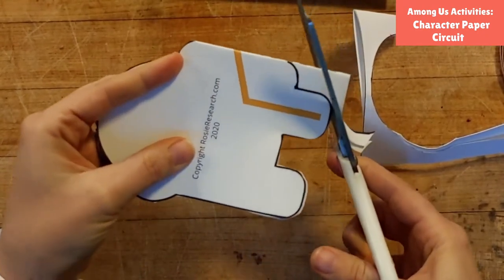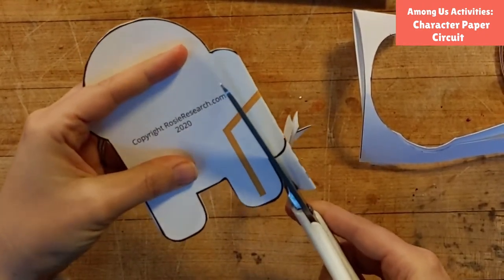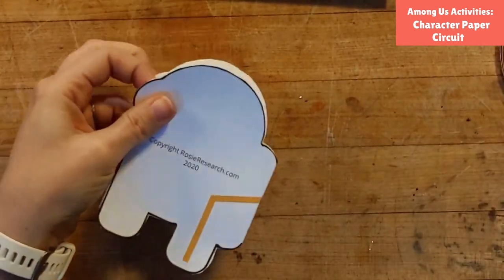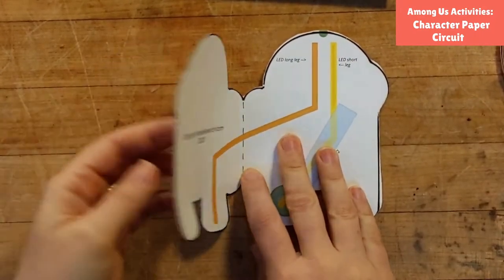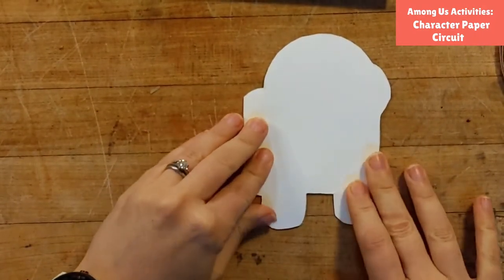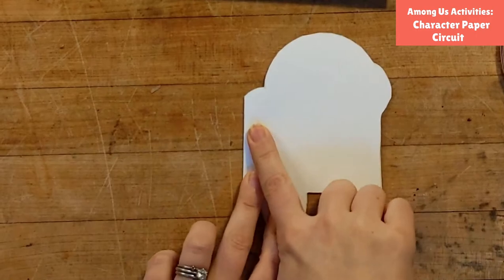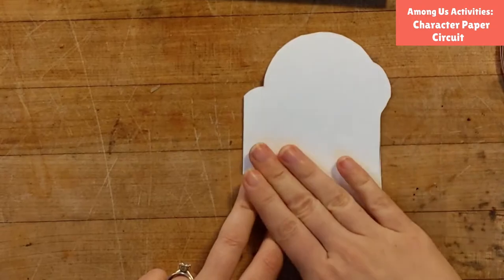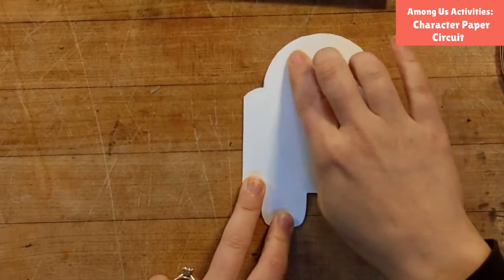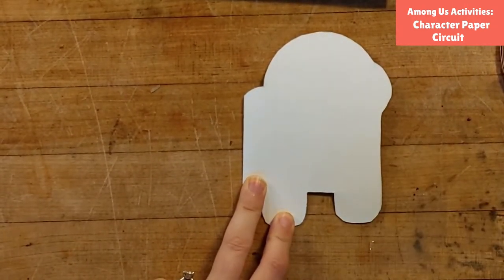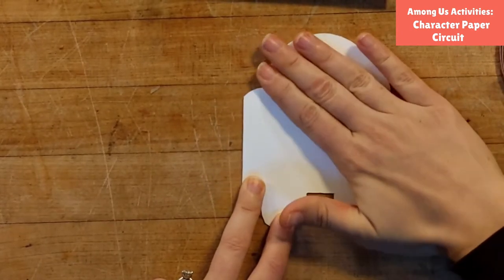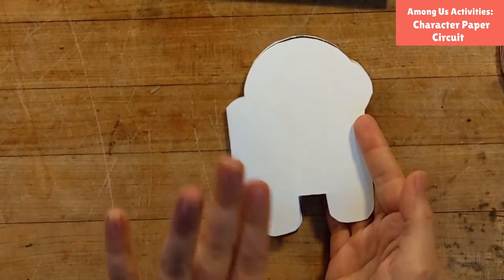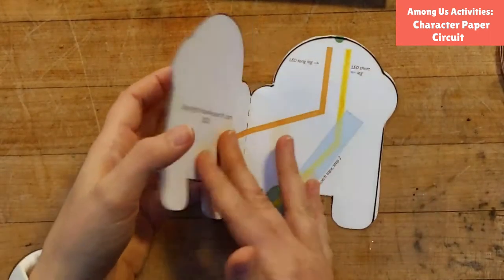Alright now in the end our end result will be that we have our circuit and then we will fold this over this way to protect our circuit. So if you wanted to you could draw everything you wanted to right now when it's all flat and there's no bumps from the battery or wobbles from the LED legs. Just depends how you want to do it. But this is a chance if you wanted to pause the video you could do that. I've always done mine after the fact.